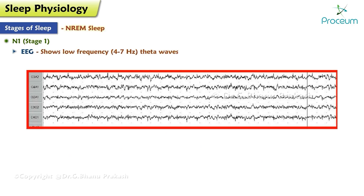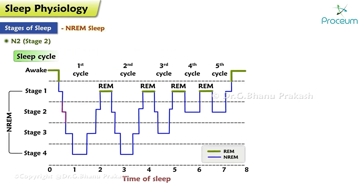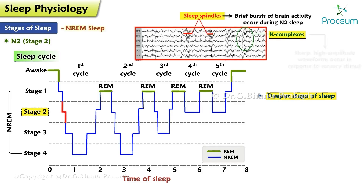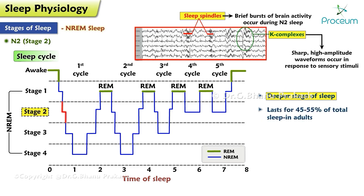An electroencephalogram during N1 shows low-frequency four to seven hertz theta waves. Stage N2 represents a deeper stage of sleep characterized by the presence of sleep spindles and K-complexes. Sleep spindles are brief bursts of brain activity that occur during N2 sleep, while K-complexes are sharp, high-amplitude waveforms that occur in response to sensory stimuli. This stage typically lasts for 45 to 55 percent of total sleep time in adults.